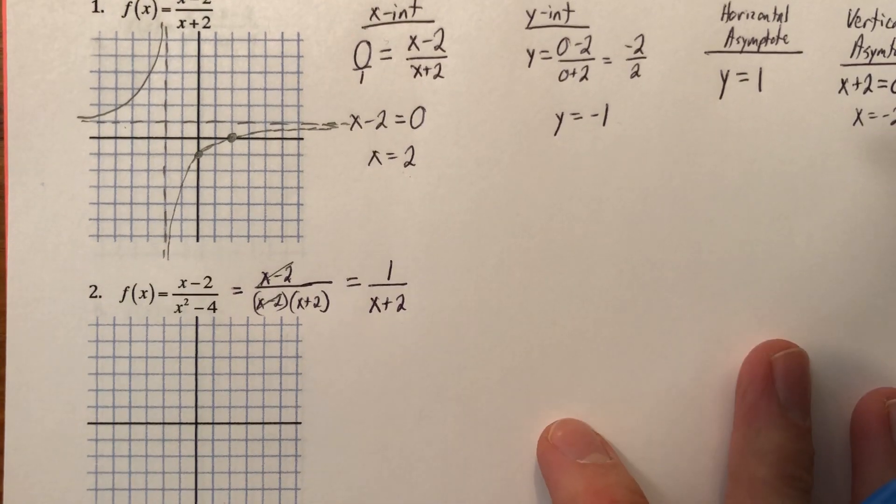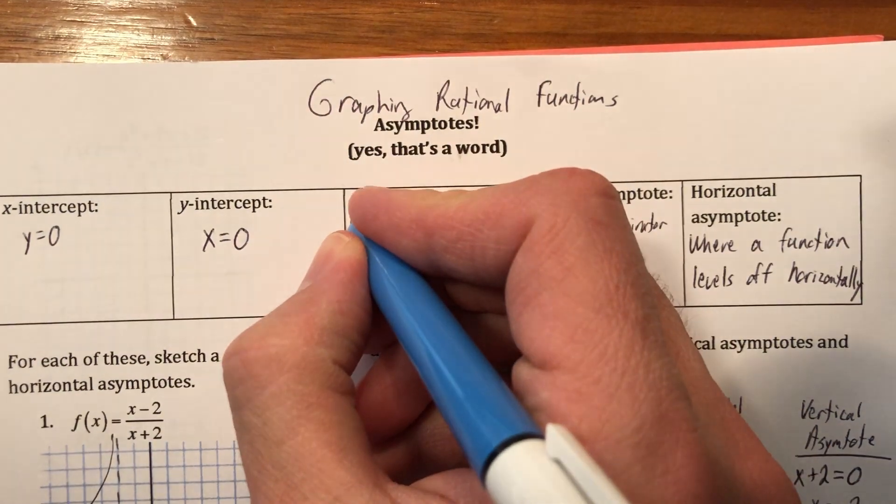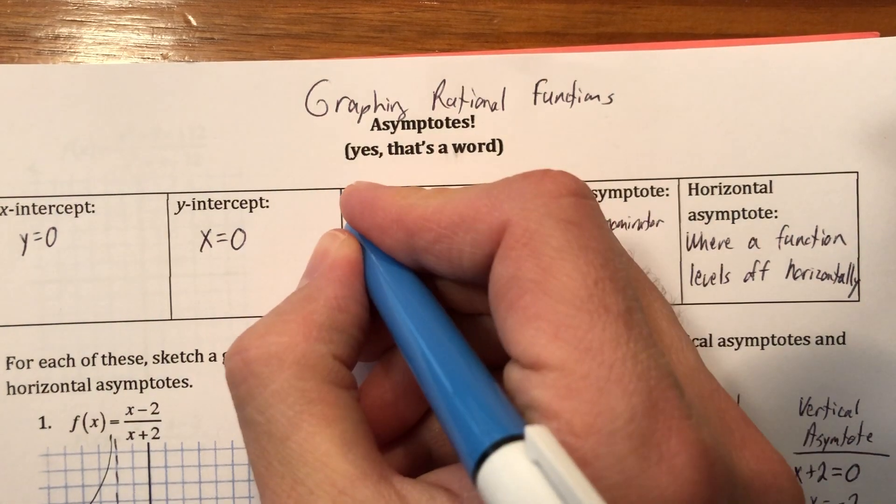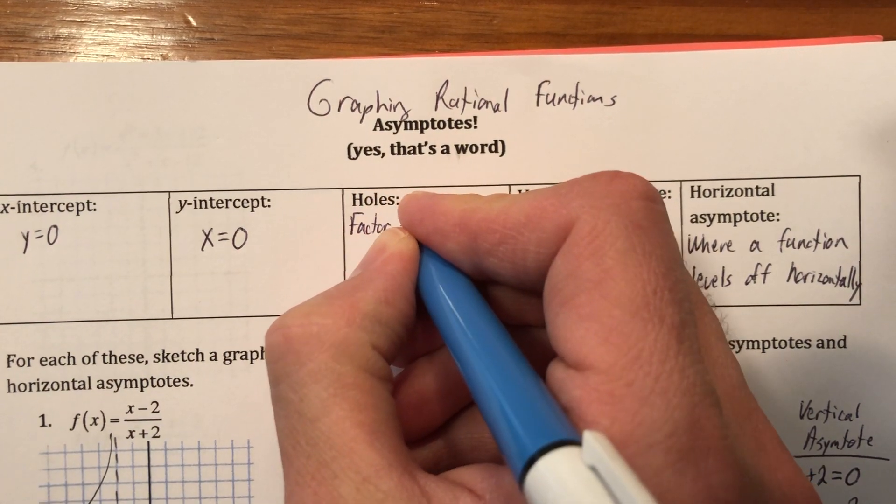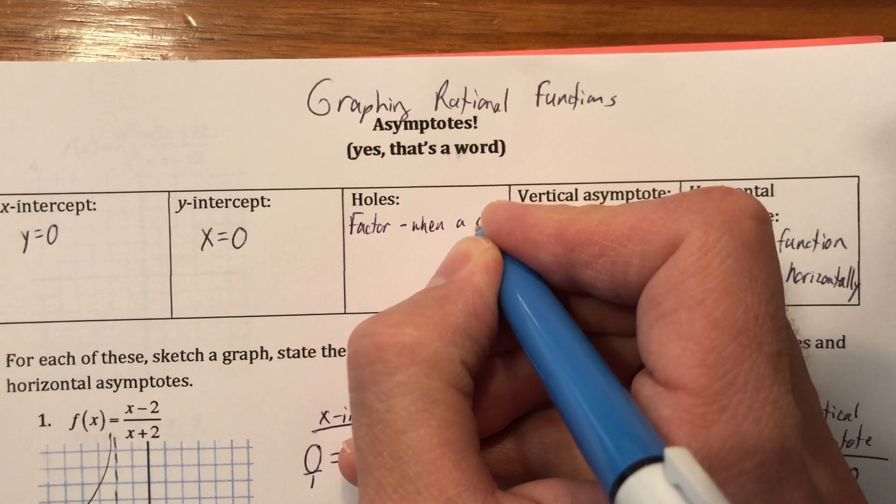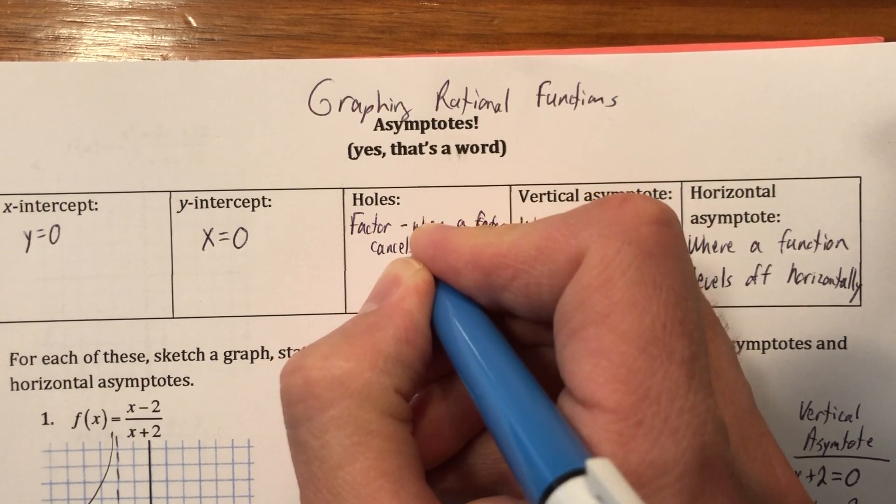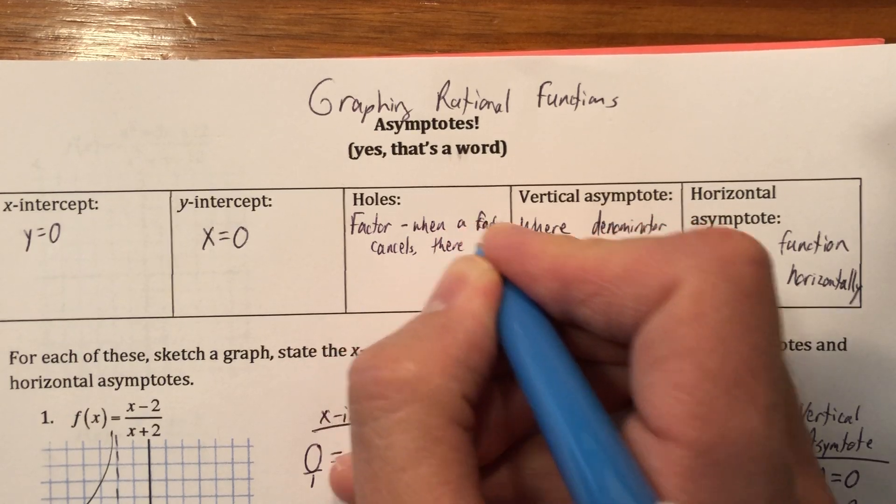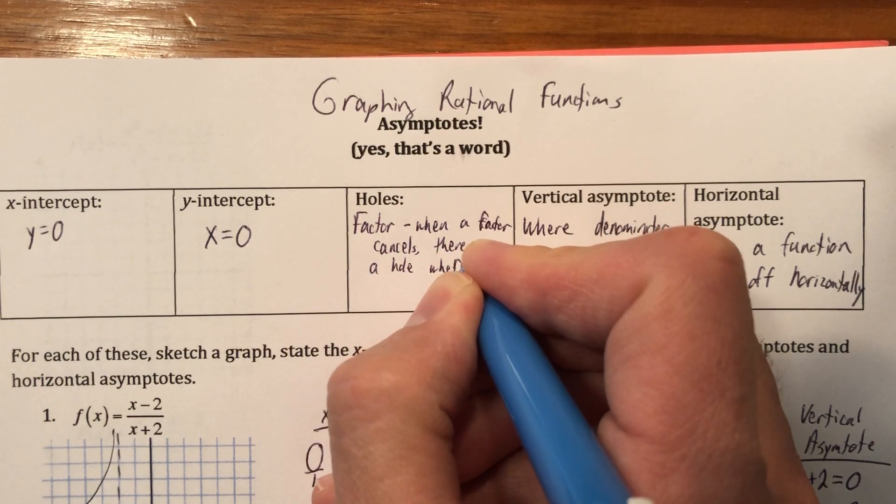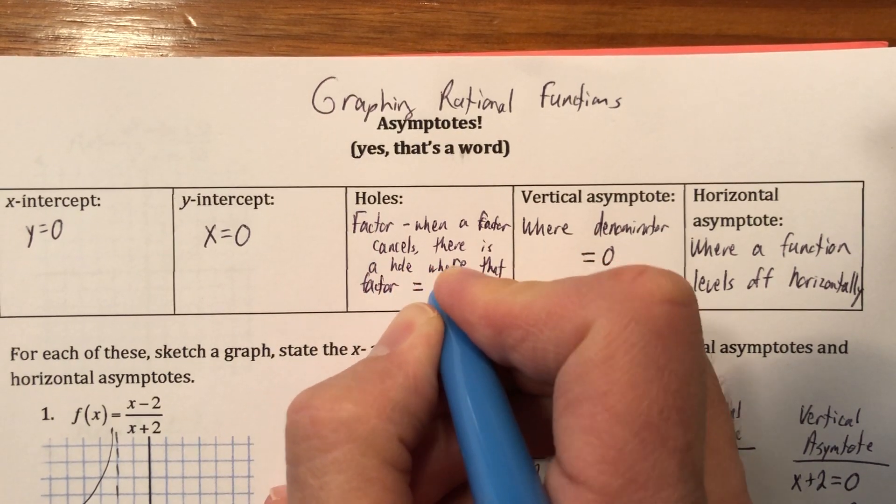So anytime you have a factor that cancels out, you're more than likely going to have a hole. So holes. I'm not going to give you a definition. I'm going to give you a way to find it. So factor, and then when a factor cancels,